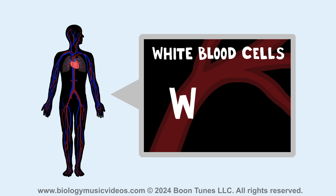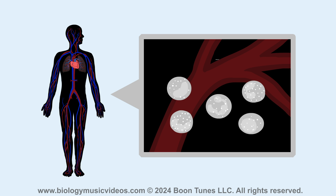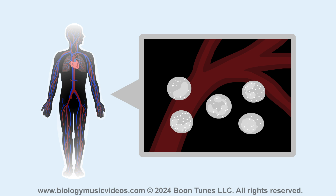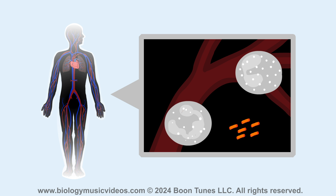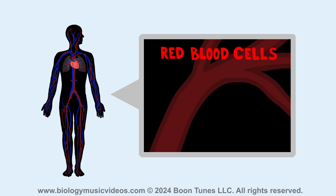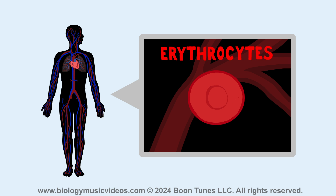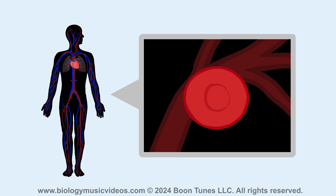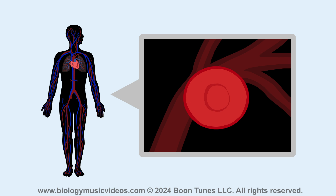The white blood cells, or WBCs, are called leukocytes collectively. They defend the body and help it fight pathogenic microbes and parasites. The red blood cells, or RBCs, are called erythrocytes technically.